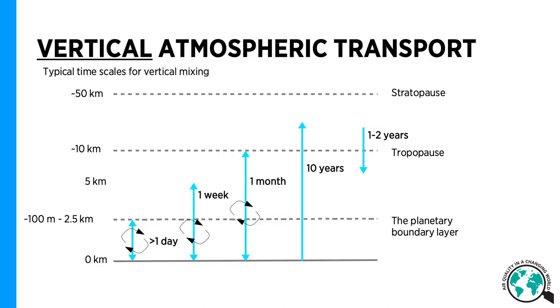The slide depicts the approximate timescales for vertical transport in the atmosphere. If a compound is emitted from the Earth's surface, it will take a few hours to reach the top of the boundary layer and longer to penetrate further up in the atmosphere as mixing becomes slower with an increase in altitude.